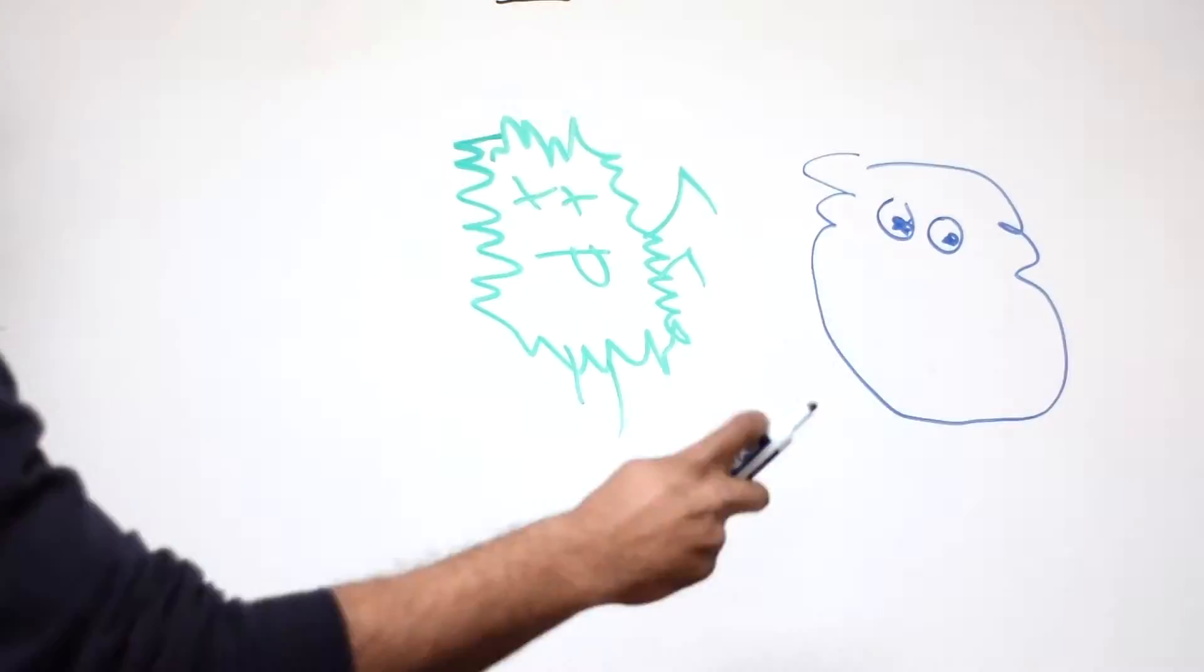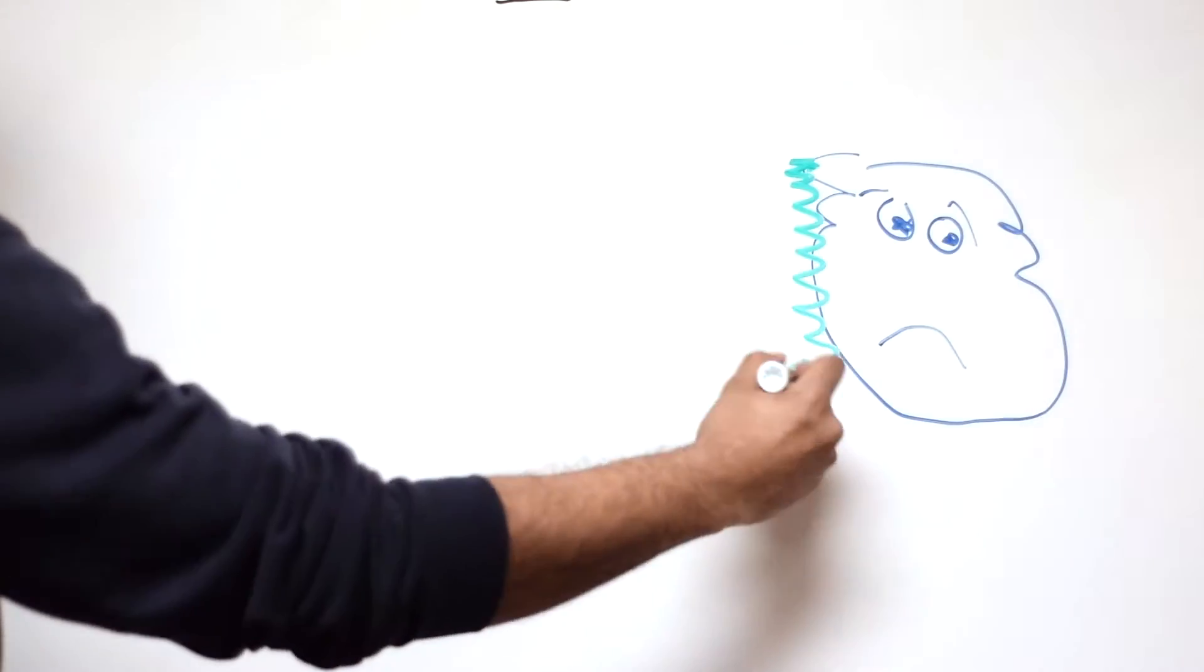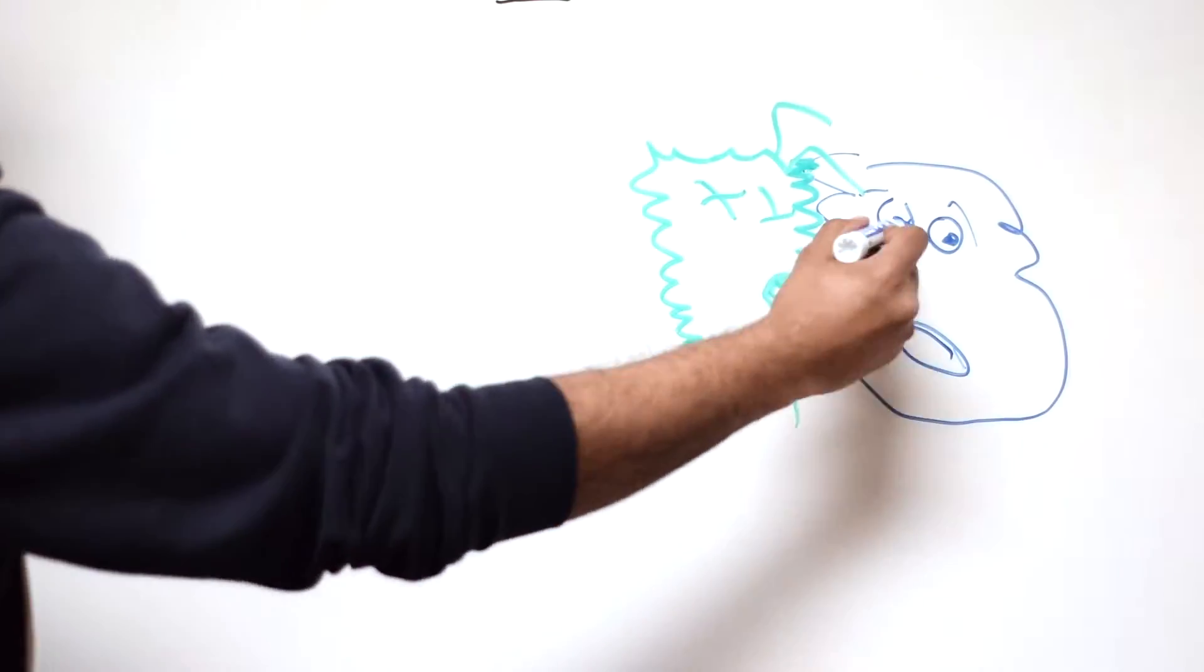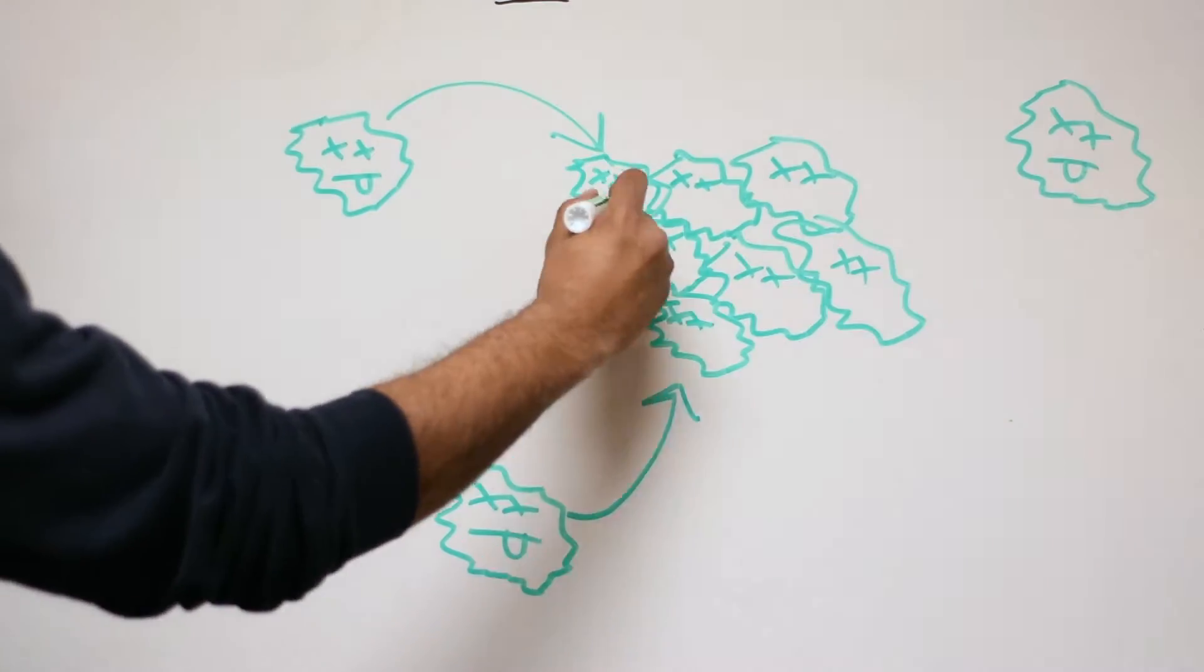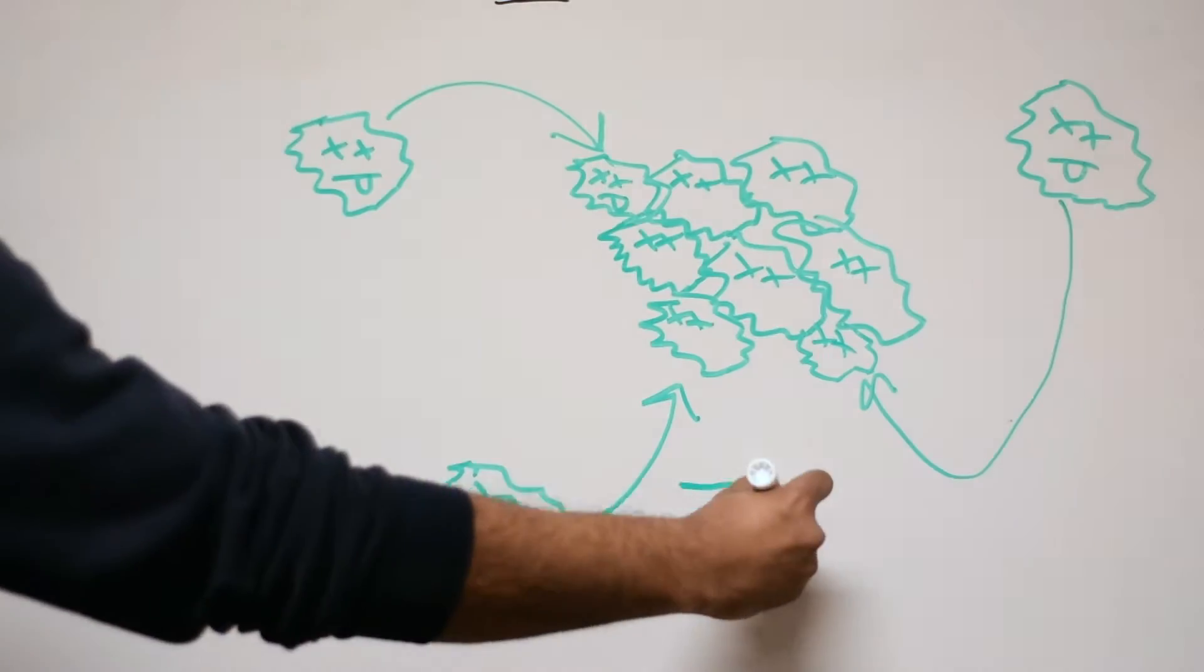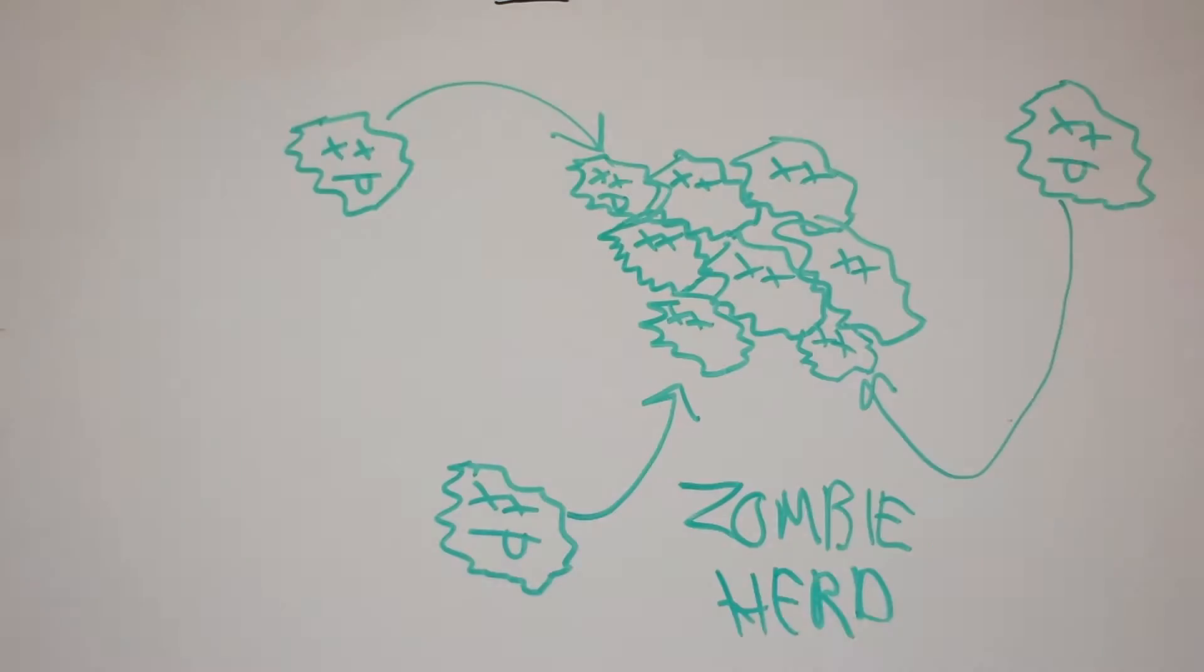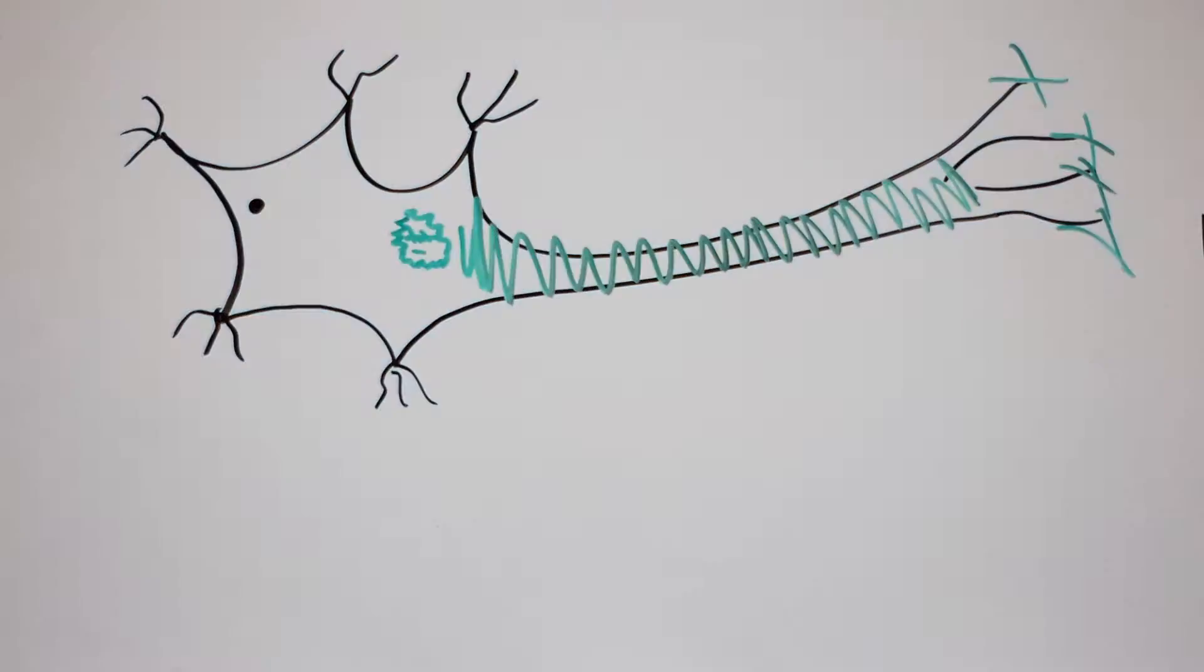From there, these zombie prions continue attacking and changing healthy proteins and forming these large clusters. These clusters act like a horde and are even more efficient in infecting other proteins. As these clusters spread and other proteins become prions, they begin to destroy the cell.